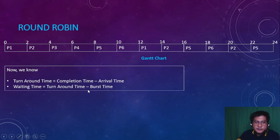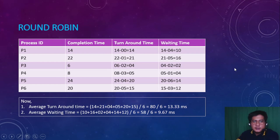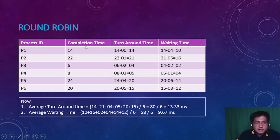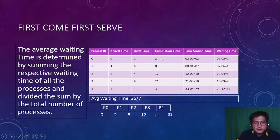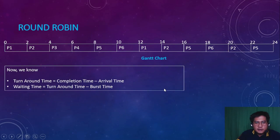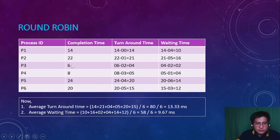Just as with FCFS, to get turnaround time we subtract completion time by arrival time, and for waiting time we subtract turnaround time by burst time. To find the completion time in Round Robin, we look at the Gantt chart. Unlike FCFS where we simply add burst times (2+6=8, 8+4=12, 12+9=21, 21+12=33), in Round Robin the completion time depends on when each process last executes.